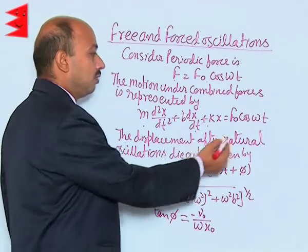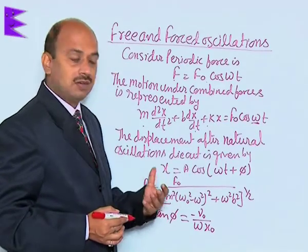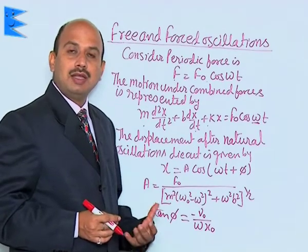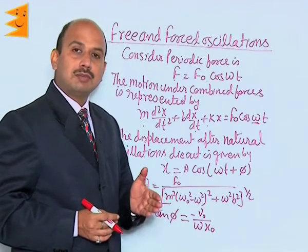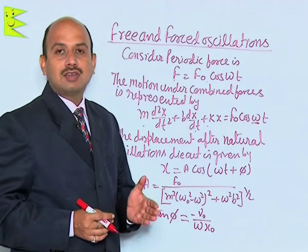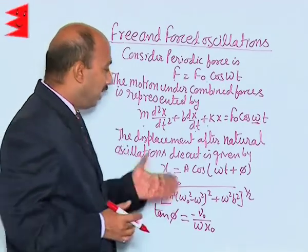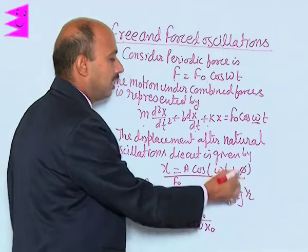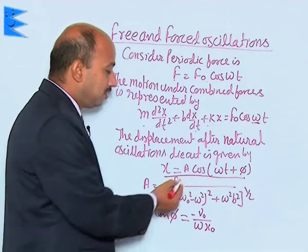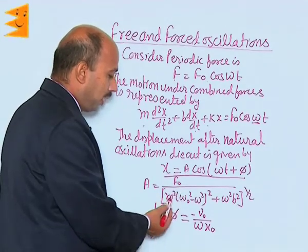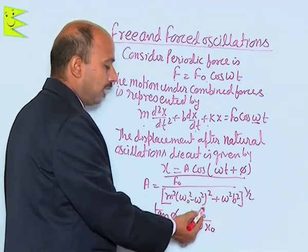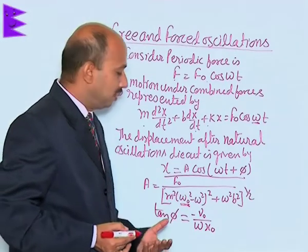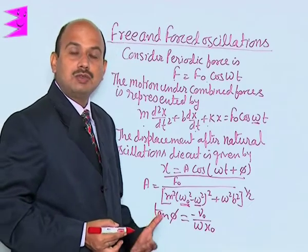Here ω is the frequency due to the driving force. We can write the displacement after the natural frequency dies out. When external force is applied, initially the body oscillates with its natural frequency, but after some time these natural frequency oscillations die out and the body starts oscillating with the frequency of the applied force. When the natural frequency dies out, the displacement of the body is given by x = A cos(ωt + φ), where φ is the phase angle. The amplitude A is given by F₀ upon [m²(ω₀² − ω²)² + ω²b²]^(1/2), where ω₀ is the natural angular frequency and ω is the frequency due to the driving force.